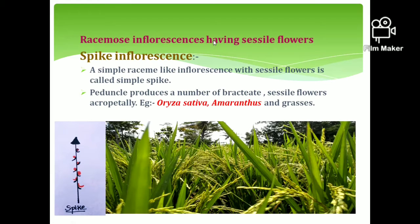Next we have racemose inflorescence having sessile flowers. The first one is spike inflorescence. This is a simple raceme type of inflorescence, but the flowers are sessile — they have no pedicels. The flowers are bracteate and arranged in an acropetal manner. Examples include Oryza sativa (rice) and Amaranthus (thotakura), as well as some other grasses.